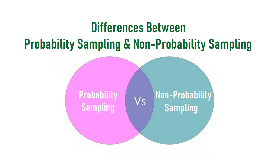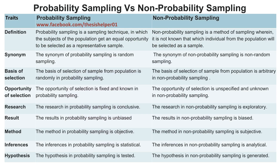Differences between probability sampling and non-probability sampling. Probability sampling is a sampling technique in which the subjects of the population get an equal opportunity to be selected as a representative sample. Whereas non-probability sampling is a method of sampling wherein it is not known which individual from the population will be selected as a sample.